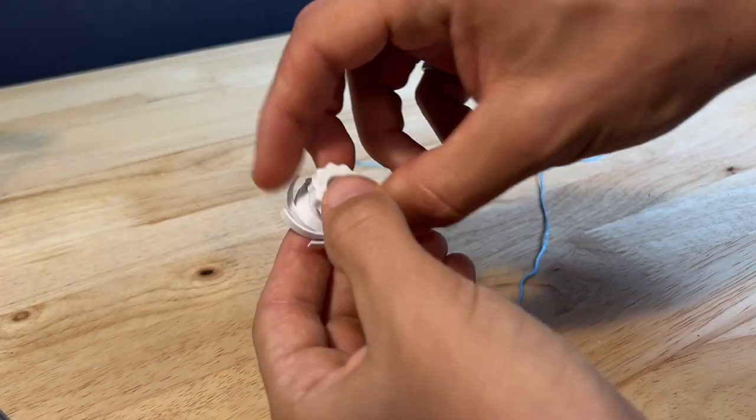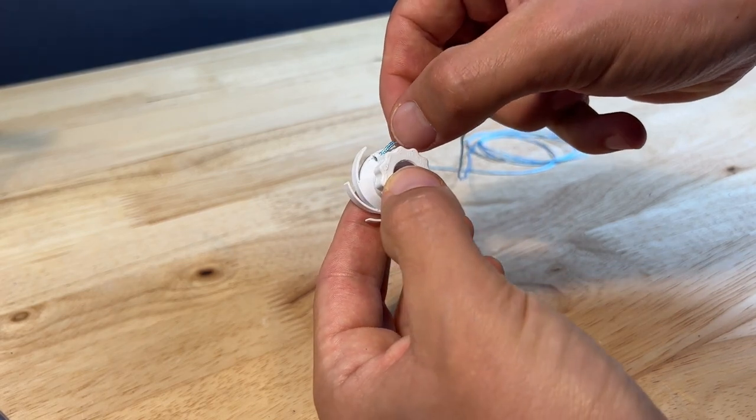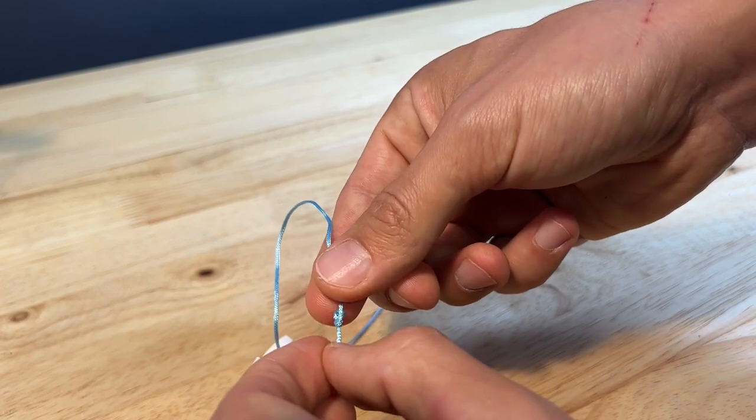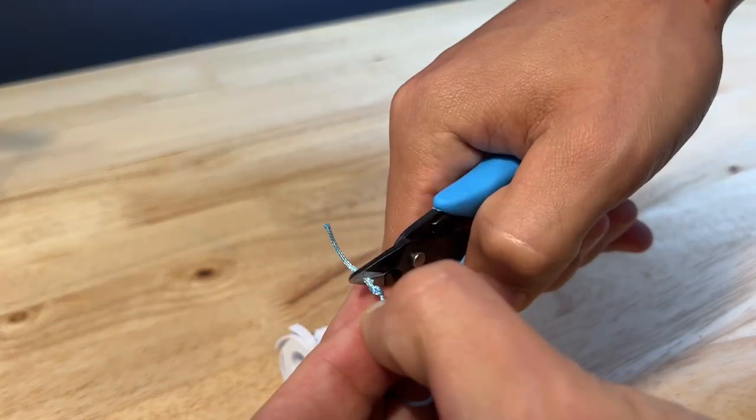Grab your spool and slide one end of the string through the hole in the top of the spool. Make sure it's going from right to left. Tie a big knot on the end of the string. It has to be big enough that it doesn't go through the hole. Cut off the excess and then make sure that the string is secure.